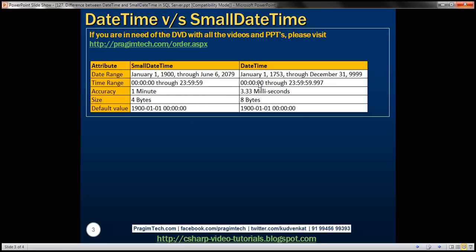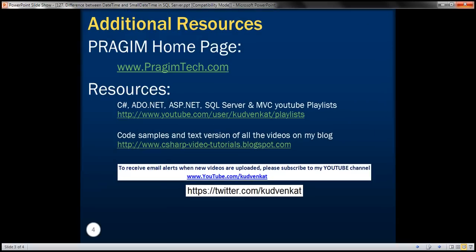Obviously, datetime is more accurate than smalldatetime. As for size, smalldatetime takes 4 bytes whereas datetime takes 8 bytes — twice the size of smalldatetime. The default value for both data types is the same: January 1st, 1900, 0 hours, 0 minutes, and 0 seconds. Thank you for listening and have a great day.